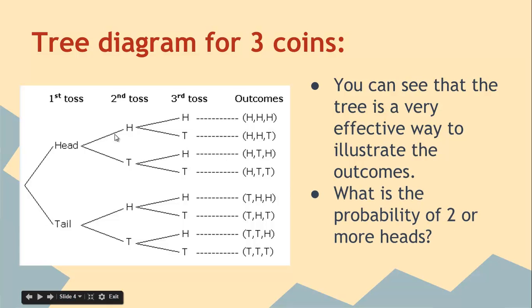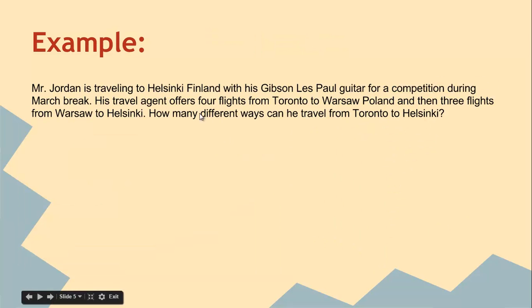What's the probability of two or more heads? We just count the outcomes with two or more heads. So you can say one, two, three, four out of eight, or one out of two.